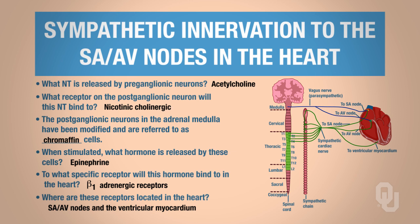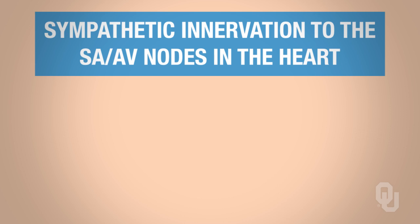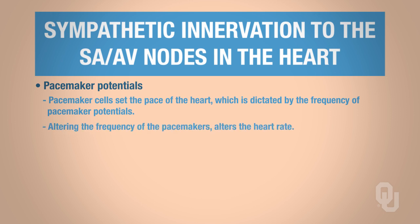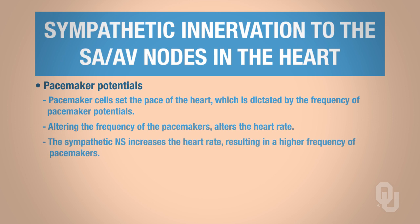The focus of this video is sympathetic innervation to only the SA and AV nodes, where pacemaker cells are located, so we'll be altering pacemaker potentials. Pacemaker cells set the pace for the heart, which is dictated by the frequency of pacemaker potentials and action potentials. The sympathetic nervous system increases heart rate, so we need a higher frequency of pacemaker potentials.